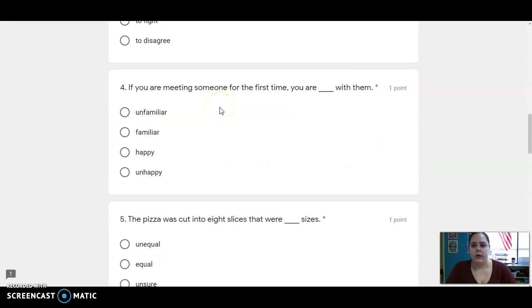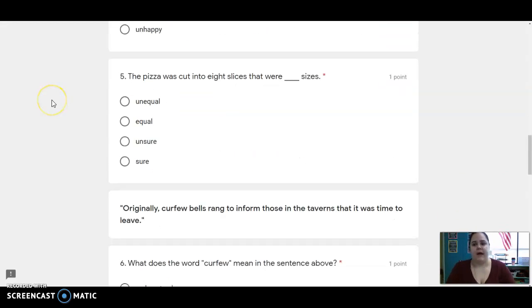Number four, if you are meeting someone for the first time, you are blank with them. Number five, the pizza was cut into eight slices that were blank sizes. Plug in the correct word.